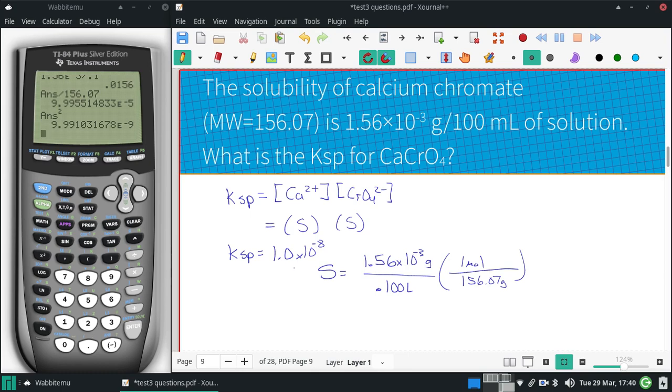Actually, I can do three significant figures because of that 1.56. So I am going to do 9.99 times 10 to the negative ninth.